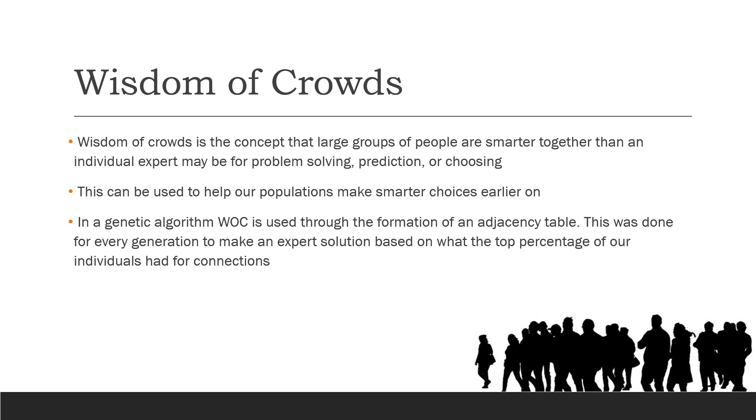What is wisdom of crowds? Wisdom of crowds is the concept that a large group of people are smarter together than an individual expert may be for problem solving, prediction, or choosing. This can be used to help our populations make smarter choices earlier on, helping the genetic algorithm have a basis on what it's doing instead of allowing randomness to prevent it from getting as far as it can earlier on. In a genetic algorithm, wisdom of crowds is used by forming an adjacency table, which is a table of all the times two connections are back to back. If node two and node seven are connected a lot, that will be implemented first in our expert solution since that appears to be a good connection.